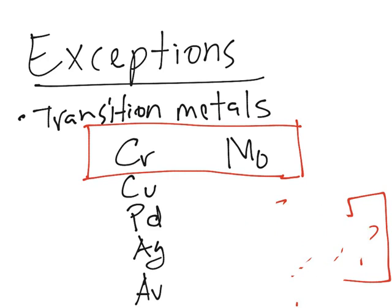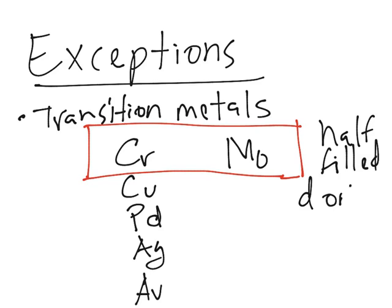So they will have their last subshell will be the d. So these two like having a half-filled d series or d subshell. Yeah I'm equating orbital with subshell or series, it's the same thing. So they like having let's say d5 at the end. So it's d5.